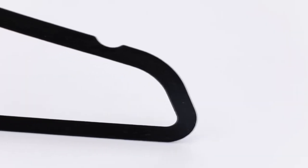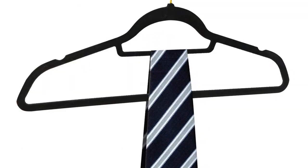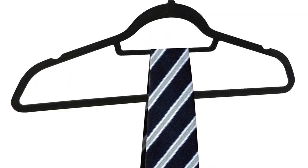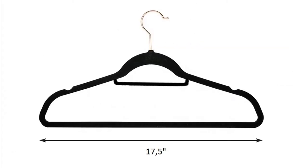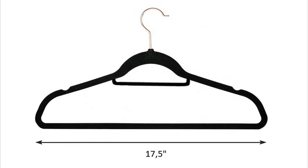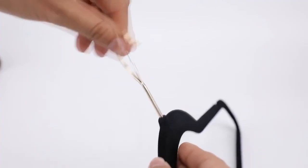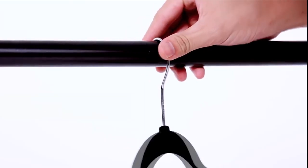The contoured shoulders and non-slip velvet feel protect your suit's shape and fabric, while the notches hold accessories and clothes securely in place, preventing them from slipping off. Convenient size of 17.5 inches to save space in your wardrobe. The sturdy chrome hook can change in length and holds up to 10 pounds.